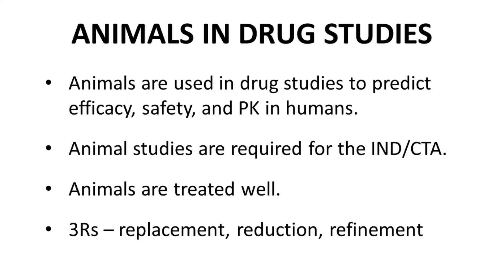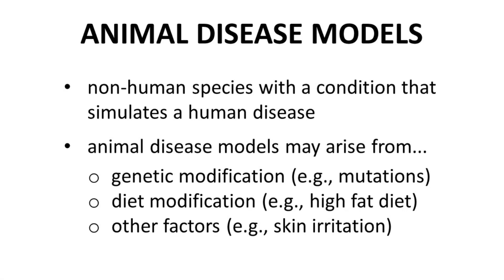Animal studies are a very controversial topic, but they currently remain an unfortunate necessity for drug discovery. An animal disease model is an animal — a non-human species — with a disease or condition that replicates a human disease. Animal disease models can arise from genetic changes such as mutations or a gene knockout, diet modification, or other factors.